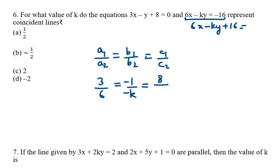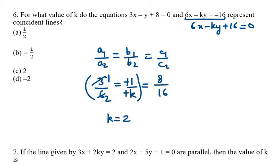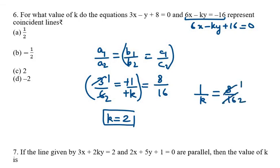Rewriting: 6x − ky + 16 = 0, so c2 = 16. From a1/a2 = b1/b2: (3/6) = (−1/−k), the negatives cancel, giving 1/2 = 1/k, so k = 2. Checking b1/b2 = c1/c2 also gives k = 2. Therefore k = 2, which is option C.